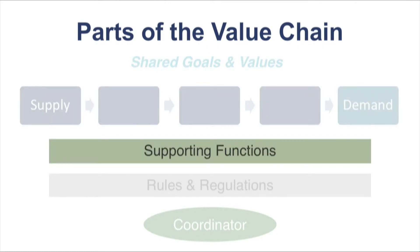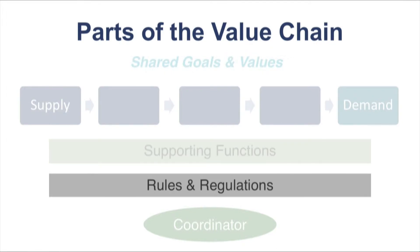Supporting tasks are not part of the main value chain, but are essential for the value chain to function. These might include related services such as equipment supply and repair, transportation, storage, financial services, education and training, and the like. Rules and regulations include standards, regulations, laws, and informal rules and norms. Examples might include food safety regulations, certification requirements, tax codes, and cultural traditions or assumptions around gender and ethnicity in particular job roles.